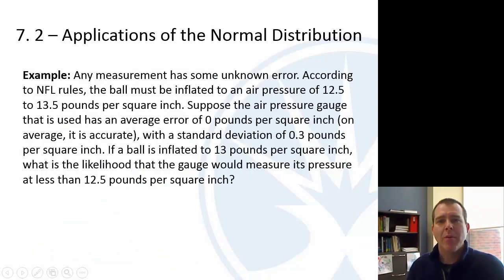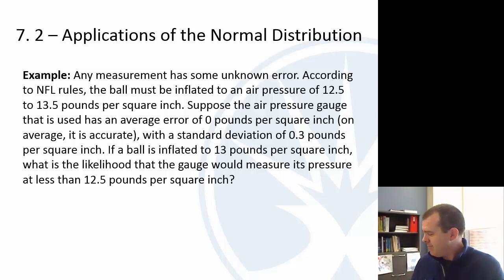All right, so let's try another example. I thought I would pull in one from recent news here. According to NFL rules, the ball has to be inflated to an air pressure of 12.5 to 13.5 pounds per square inch. Now here's the thing, whenever you measure something, you don't know if it's 100% accurate. You can't actually measure anything 100% accurately. There's always some margin of error. Now the better tool, the better device that you use, the better gauge is going to be more precise. But even if I grab the weight of this little pen, and if I put this on my bathroom scale, it's probably not even going to register.